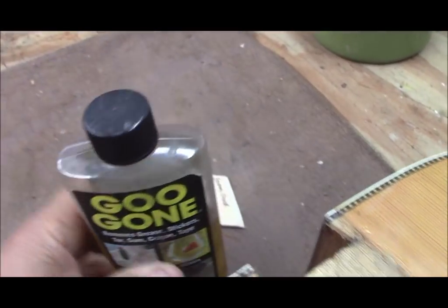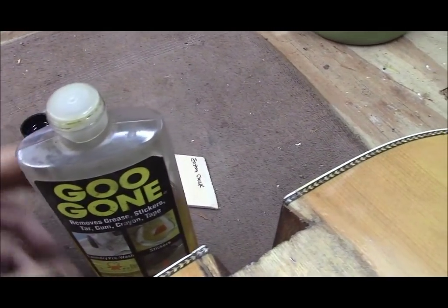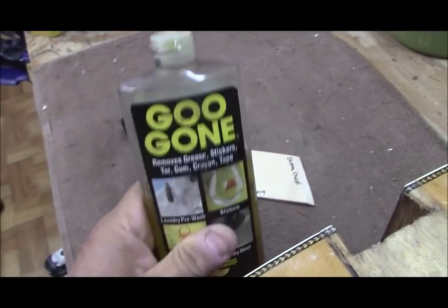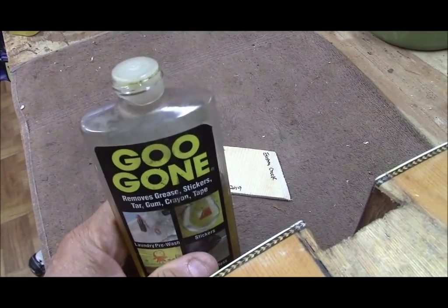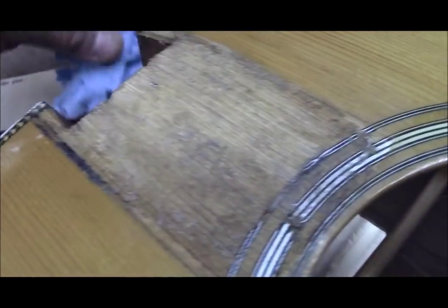One way to look for cracks is to take this stuff, Goo Gone, which is just naphtha. You can use lighter fluid. Check to make sure that the lighter fluid is actually naphtha because they change occasionally. This stuff I trust. I used it to take pickguard adhesive off of a guitar and it's pretty good. You're not gonna leave it soaking on the top anyway.